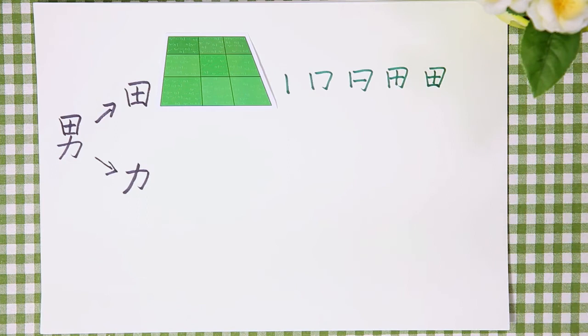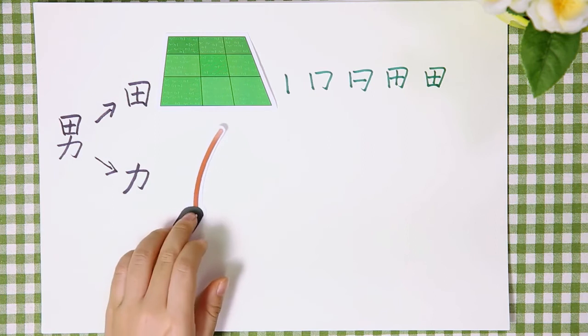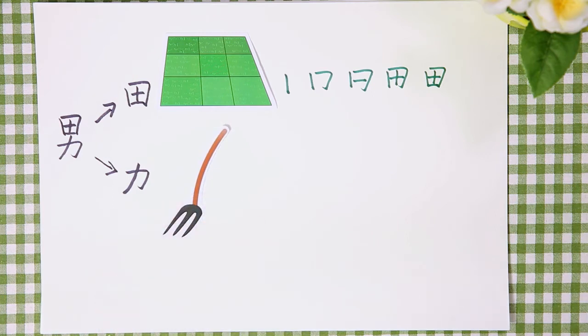And the lower half, it develops from a farm tool like this. It represents strength.